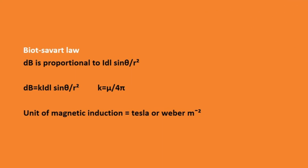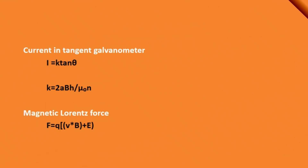Next is Biot-Savart law. The magnetic field dB is proportional to I·dL·sin theta by r². We can write dB equal to K·I·dL·sin theta by r². Here K is the proportionality constant equal to mu by 4·pi. The unit of magnetic induction is Tesla or Weber per meter squared. Next is current in a tangent galvanometer: I equal to K·tan theta, where K equal to 2r·BH by mu-not·N.